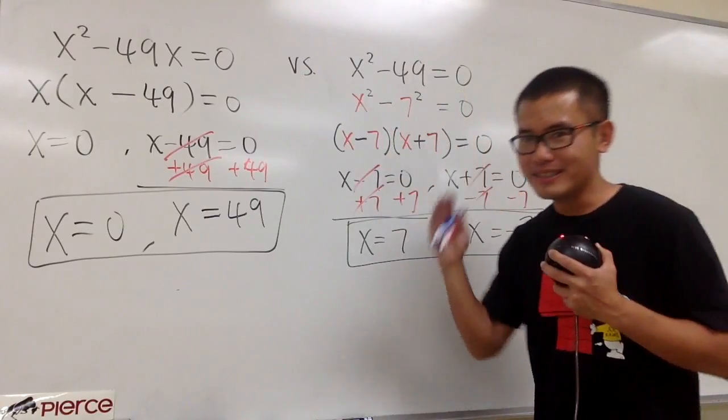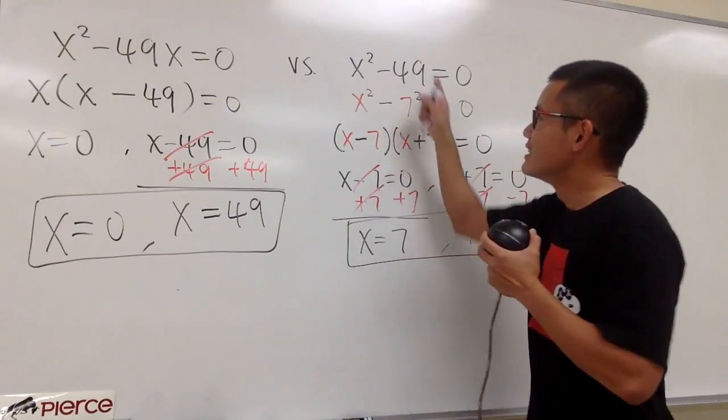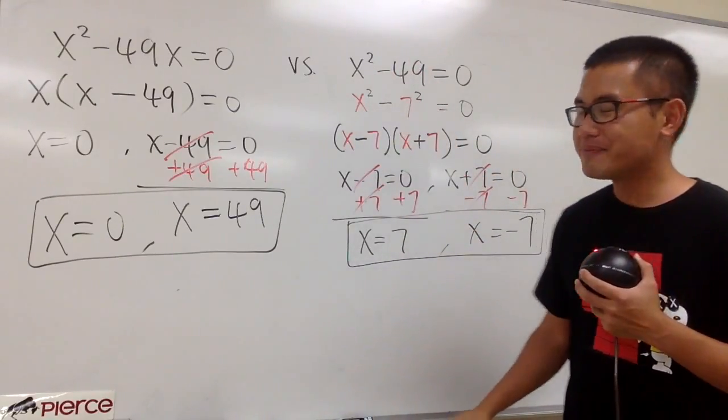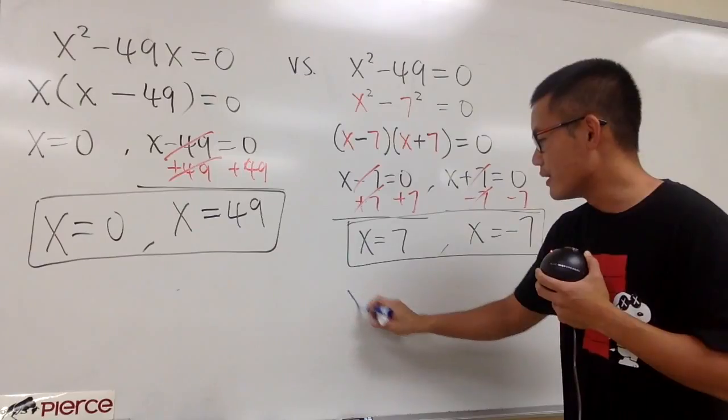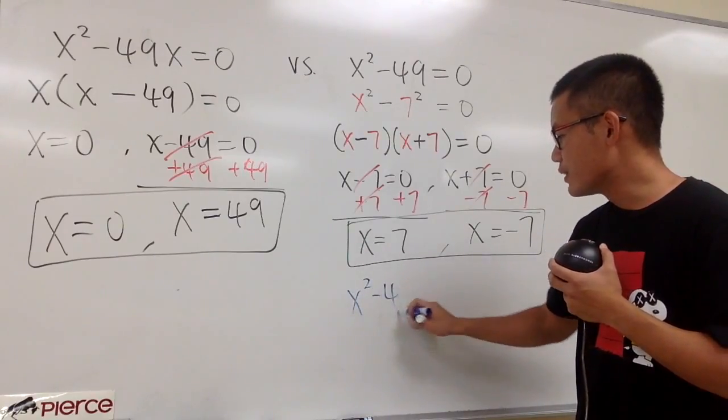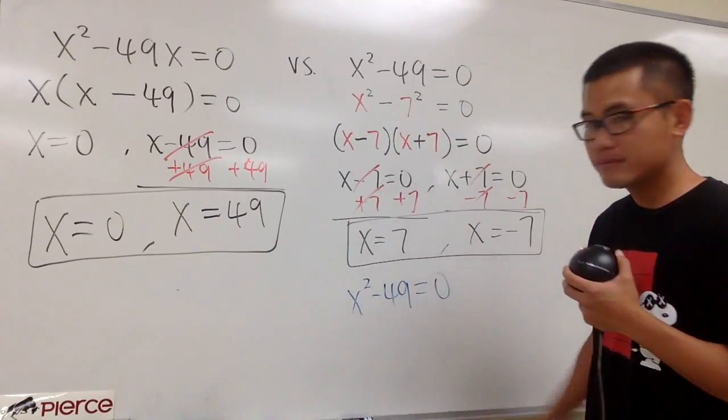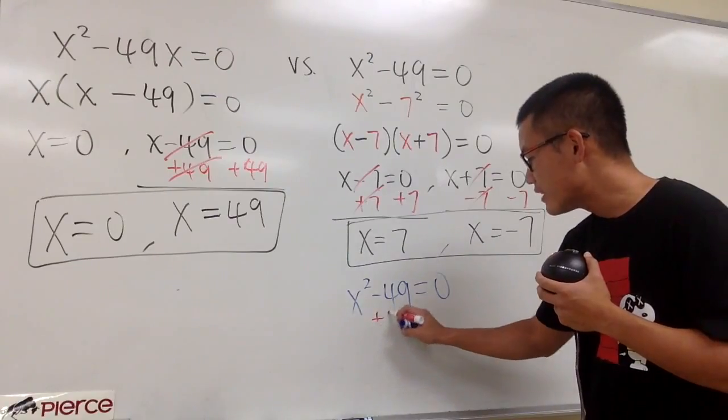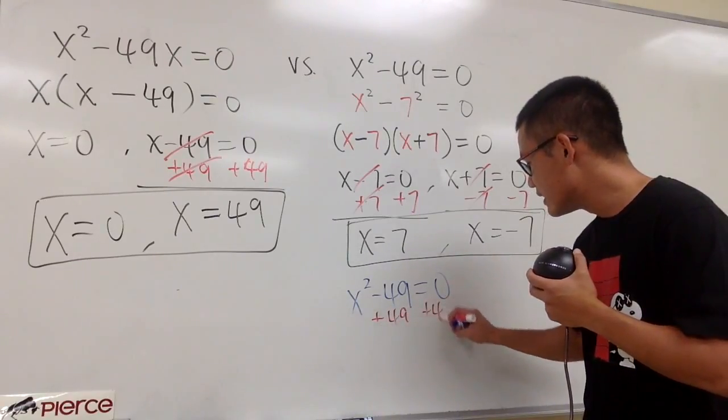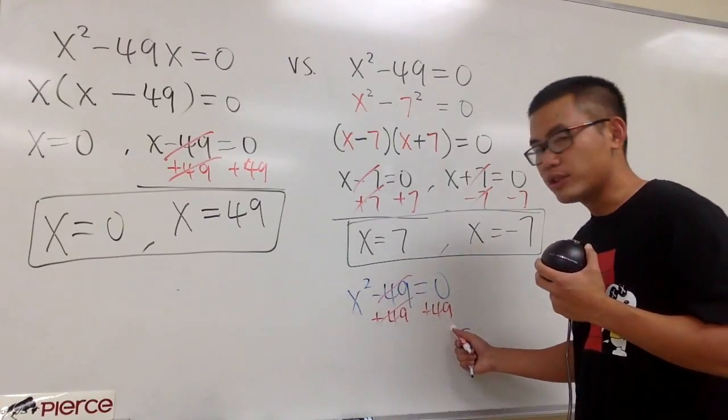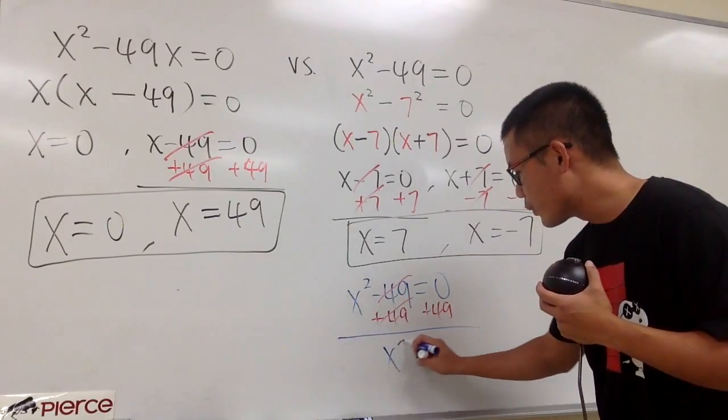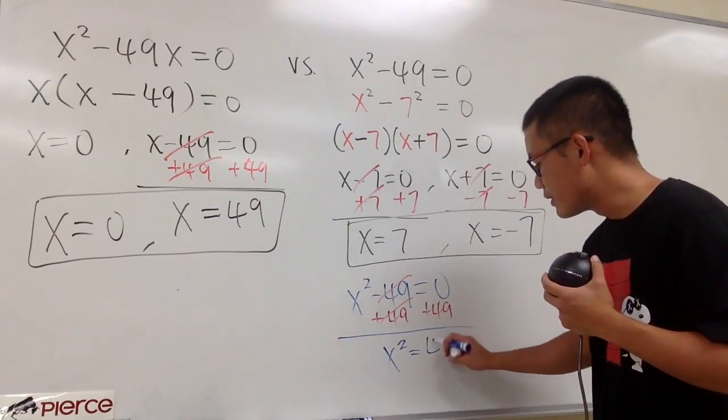And I know because I can read your mind. Some of you guys did this by taking the square root on both sides. So, I'll show you guys real quick right here as well. If you look at x squared minus 49 is equal to 0. Yes, you can just add 49 on both sides. Because this is just a number. And we will have x squared equals to positive 49.